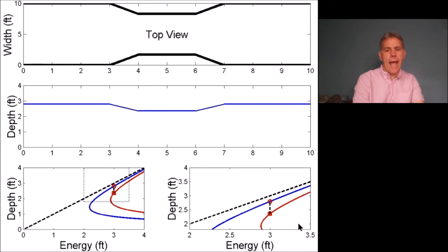You can see that for the same energy, a smaller depth appears on the red EY diagram than on the blue. Therefore, the depth of flow actually diminishes in the constriction.